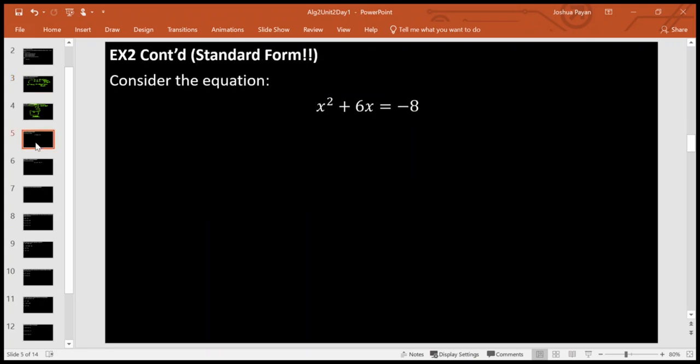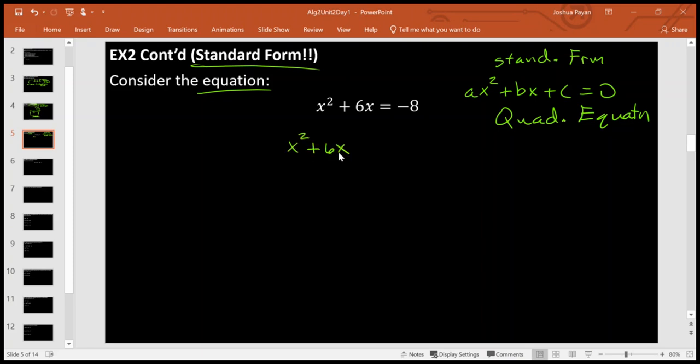Okay, so back over here. So this guy here is not in standard form. If I have a standard form quadratic equation, it has to be in the form ax squared plus bx plus c equals 0. This is a standard form quadratic equation. So if I want this guy here to be in standard form, I need to say x squared plus 6x, I'm going to add 8 to both sides. And there I have it, x squared plus bx plus c equals 0. Right here again, we see a is 1, b is 6, and c is 8.